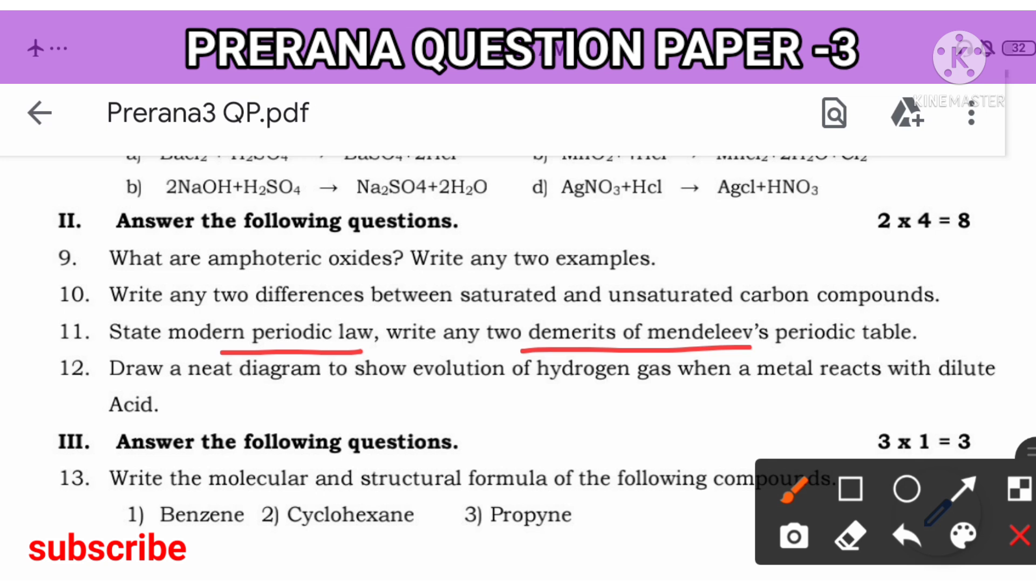Modern periodic table doesn't have any demerits. Mendeleev periodic table has demerits or disadvantages. He has not given the proper place for hydrogen, no proper place for isotopes, wrong arrangement of cobalt and nickel. These all are also demerits.